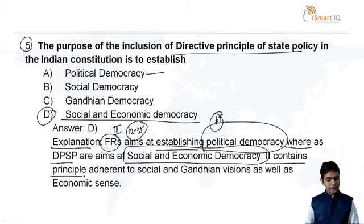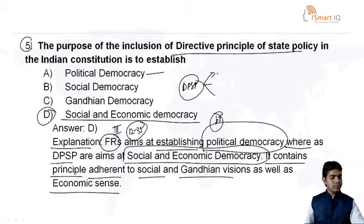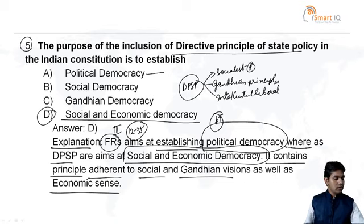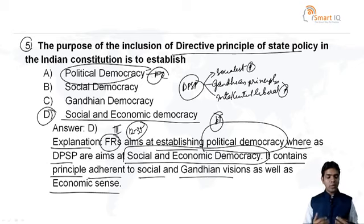The DPSP contains principles adherent to social and Gandhian visions as well as economic sense. The directive principles of state policy are divided into three kinds: socialistic principles, Gandhian principles, and intellectual liberal principles. Political democracy corresponds to fundamental rights; social and economic democracy corresponds to the directive principle of state policy. Therefore, answer D is the correct answer.